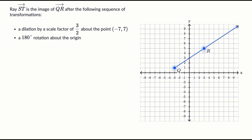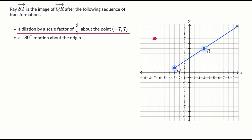Let's do the first transformation — a dilation by a scale factor of three halves about the point negative seven comma seven. So negative seven comma seven is right over there. The way I think about the dilation is I'll find the X and Y distance of each of these points from the point about which we are doing the dilation, and then I'll scale that distance.